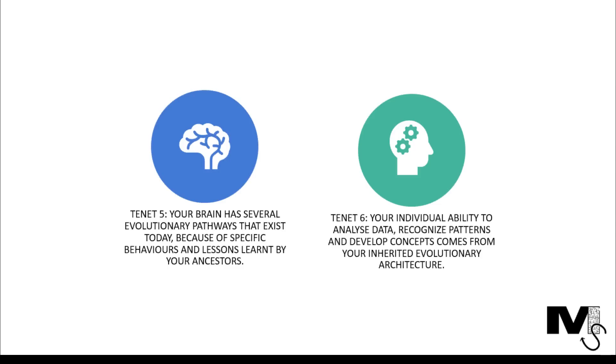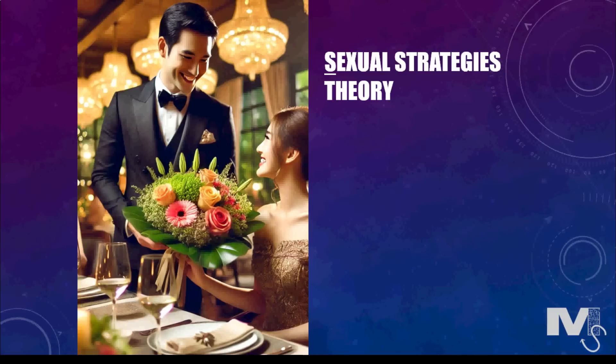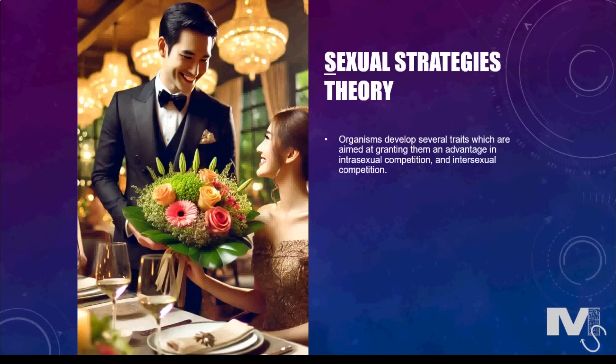Now let's look into two evolutionary psychology theories. The first is the sexual strategies theory, which is based on Darwin's sexual selection theory. This proposes that organisms develop several traits aimed at granting them an advantage in intrasexual competition — developing better traits than members of the same sex — and intersexual competition, which relates to developing traits that specifically appeal to the opposite sex.